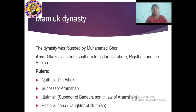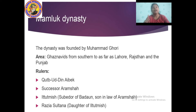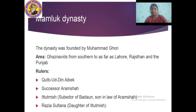Qutbuddin Aibak was among the finest and most kind-hearted rulers of the slave dynasty. He had four daughters and no son. Among the four sons-in-law, Iltutmish was the most trustworthy and capable person. So after Qutbuddin Aibak's death, he appointed Iltutmish as his successor, and Iltutmish ascended the throne of the slave dynasty.